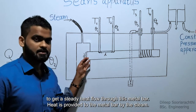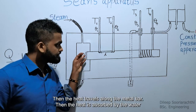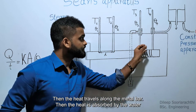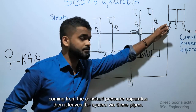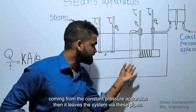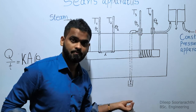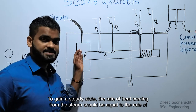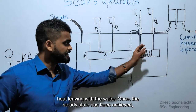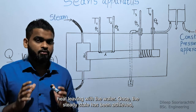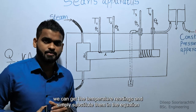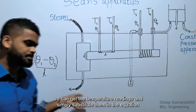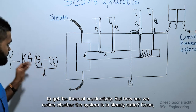Heat is provided to the metal bar by steam. Then the heat travels along the metal bar and is absorbed by the water coming from the constant pressure apparatus, which then leaves the system via these pipes. To reach steady state, the rate of heat coming from the steam should equal the rate of heat leaving with the water. Once steady state has been achieved, we can get the temperature readings and substitute them in the equation to get the thermal conductivity value.